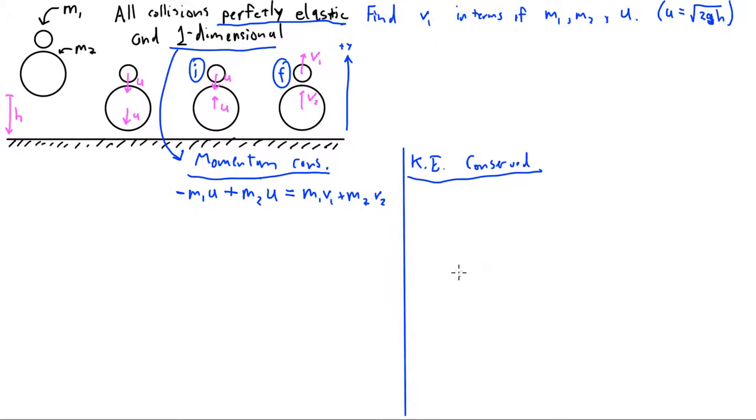The conservation of kinetic energy equation - kinetic energy is one half MV squared. So this is the initial kinetic energy of ball one, initial kinetic energy of ball two, final kinetic energy of ball one, and final kinetic energy of ball two.